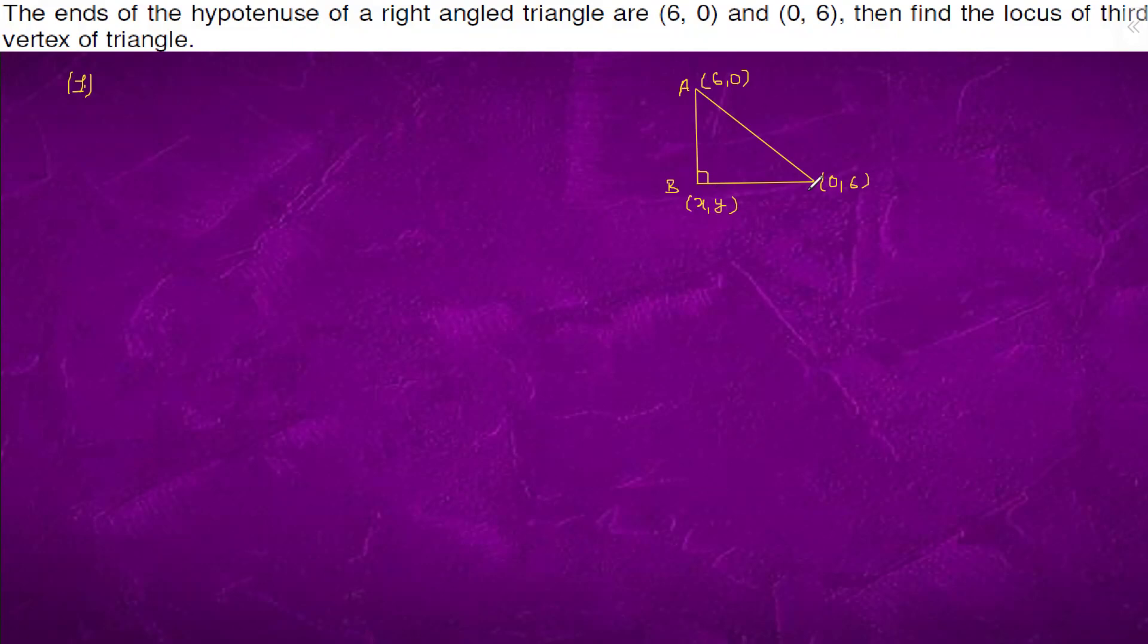We can see that AB square plus BC square equals AC square. So AB square is what? x minus 6 whole square plus y square. Plus BC is x square plus y minus 6 whole square.